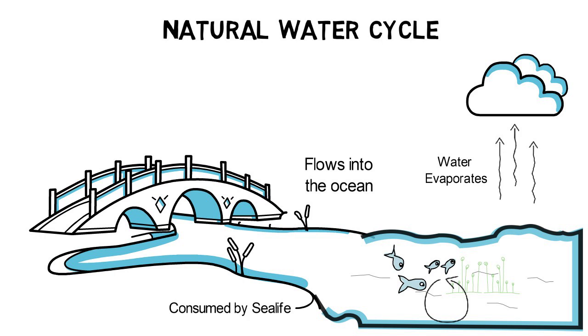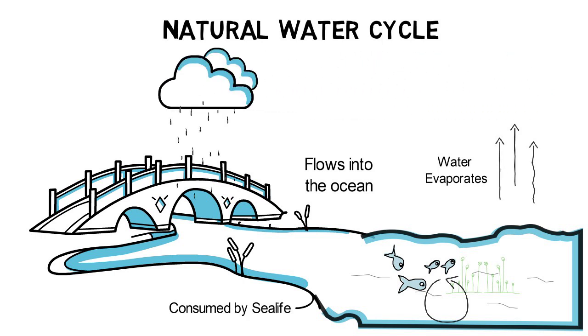Then during condensation the water vapor cools down so that water drops are formed. Precipitation takes place when the water drops fall down as rain, snow or hail to the ground.